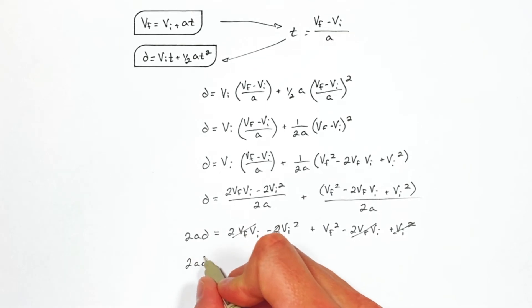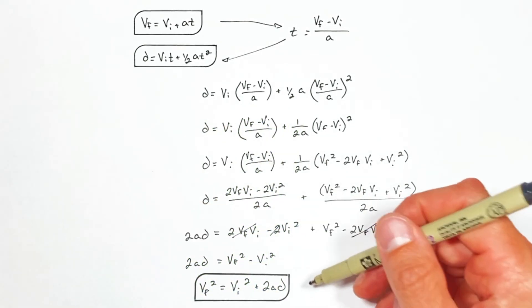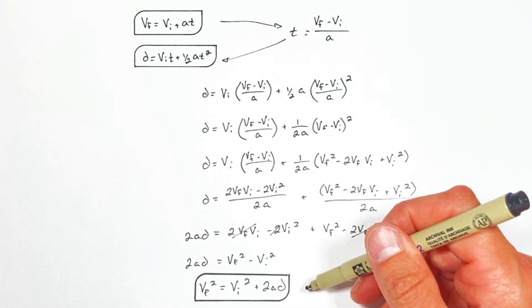So 2AD equals VF squared minus VI squared. Or rearranging this we get this, the third kinematic equation.